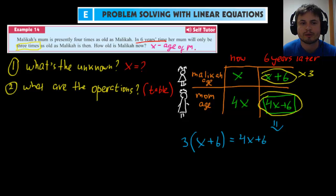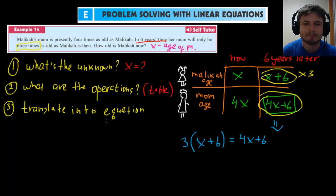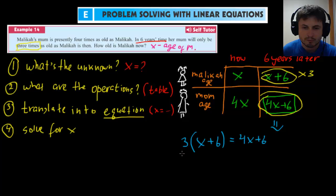And this is actually our step number three. And the step number three is translate the problem into the equation. So this is where you'll have X equals so on and so forth. And that's step number three. Step number four is solve for X. Find X. So solve the equation and let's do this very quickly. So we'll have 3X plus 18 equals to 4X plus six. Or in other words, X equals to 12.